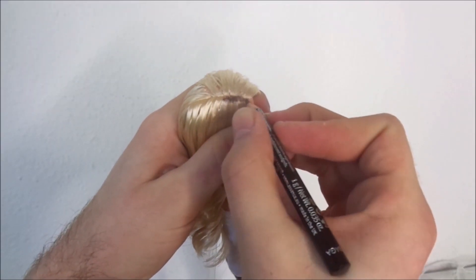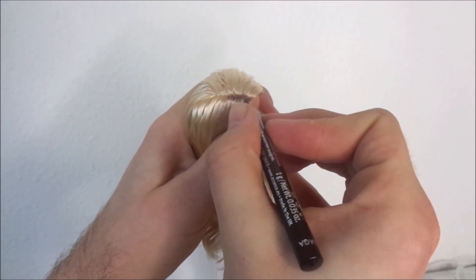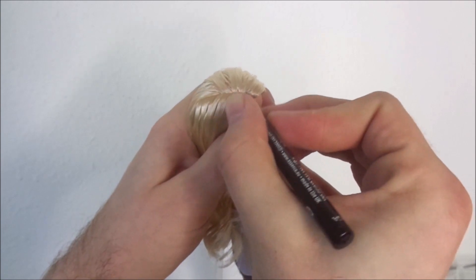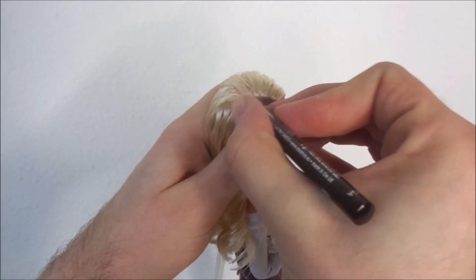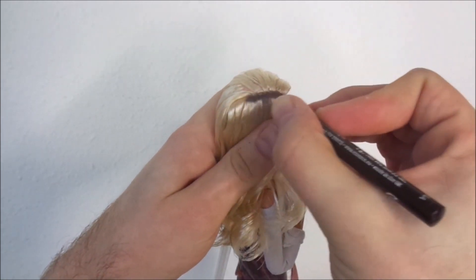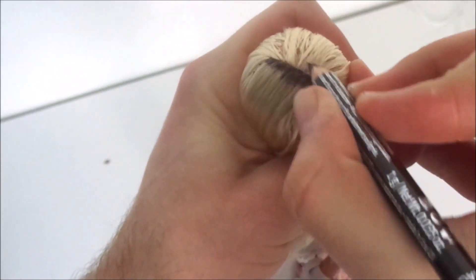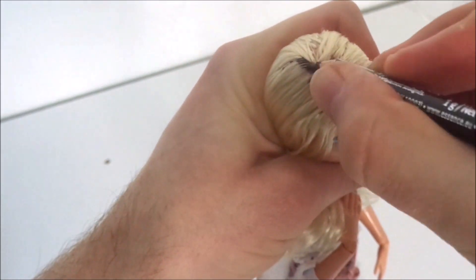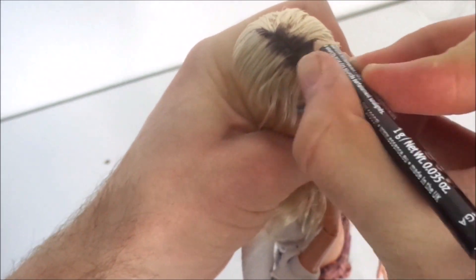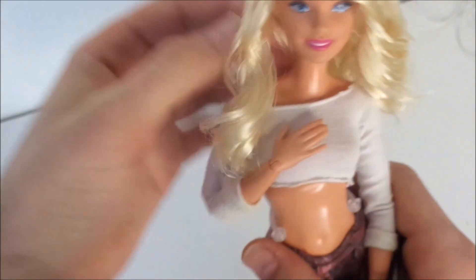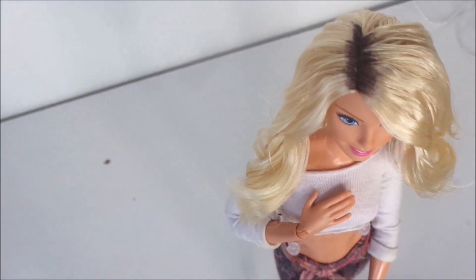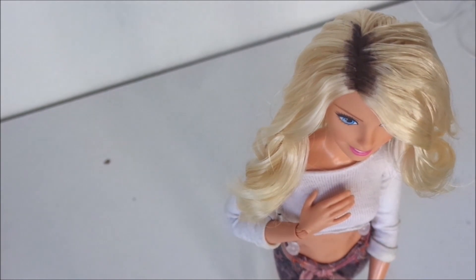You can give the doll just a really small root or take it down a little more. For this specific Barbie I didn't go down really far but just gave her some dark regrowth. As you might be able to tell right now it still does look a little powdery.